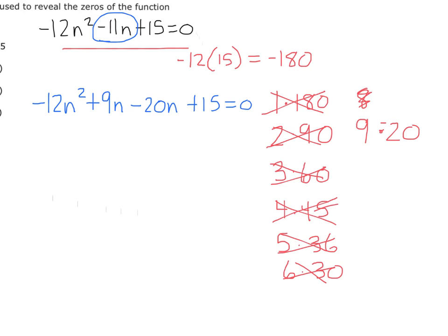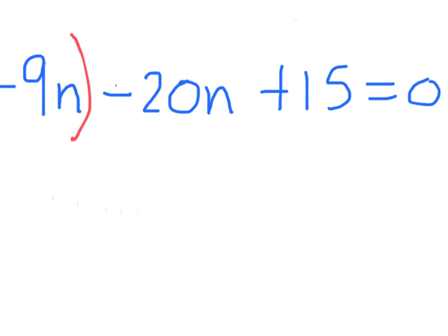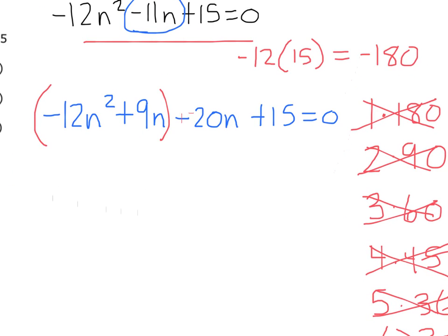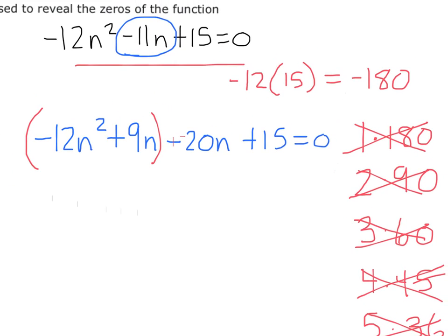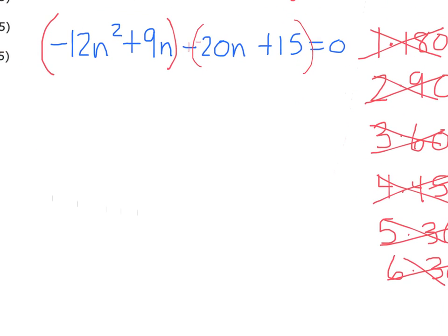Remember, this is factoring by grouping. And so now we can group it. So I'm going to group this. I'm going to change this minus right here to a plus a negative. Did I do it? Yes. And now I need to group that right side. So I'll group this and this.